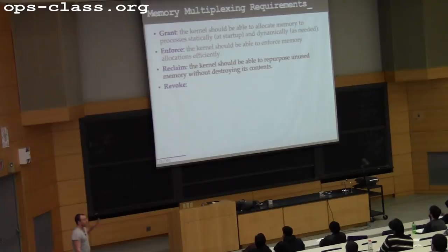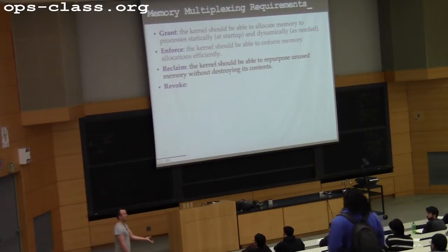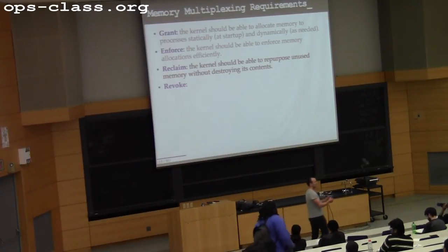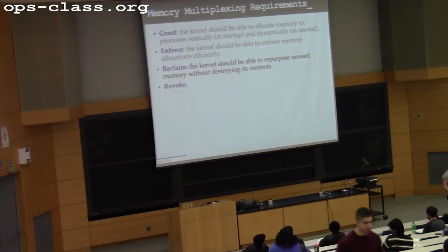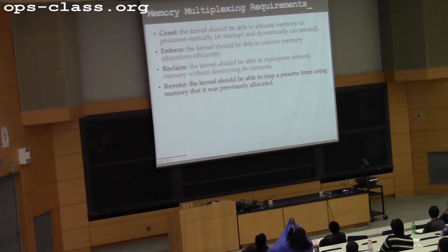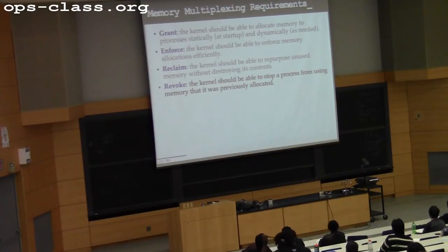Reclaim: I want to be able to transparently take existing memory that I've already allocated — I'm not revoking that allocation, I'm not taking it away from the process, but I want to be able to repurpose it temporarily. And today we'll talk about the primary mechanism that allows me to do this safely. And finally, at some point I may want to prevent a process from using memory that I've previously allocated — revoke means it can no longer use memory I've given it permission to use.